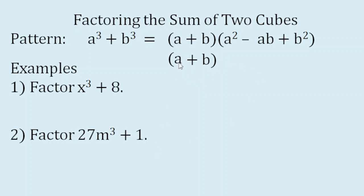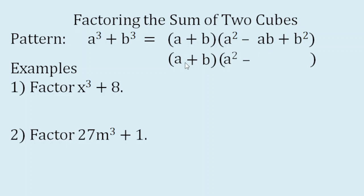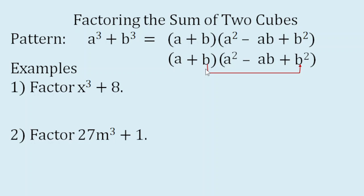Once we already have the binomial factor, we will make our trinomial factor. The first term is obtained when we square the first term of our binomial factor — A times A gives A squared. Then it should be followed by a negative sign. The second term is the product of the first and second terms of our binomial factor, that's AB. Then the last term is the square of the second term of our binomial factor.